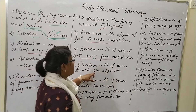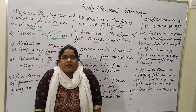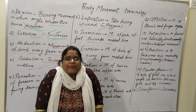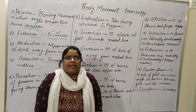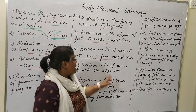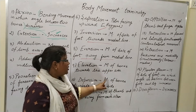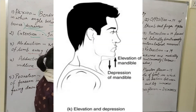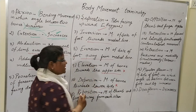So in inversion the sole moves towards the medial line, and in eversion it moves away from the medial line. Now, elevation — the movement of a bone towards the upper side. If I am doing like this shoulder movement, it is elevation. If I am doing like this, this is depression.